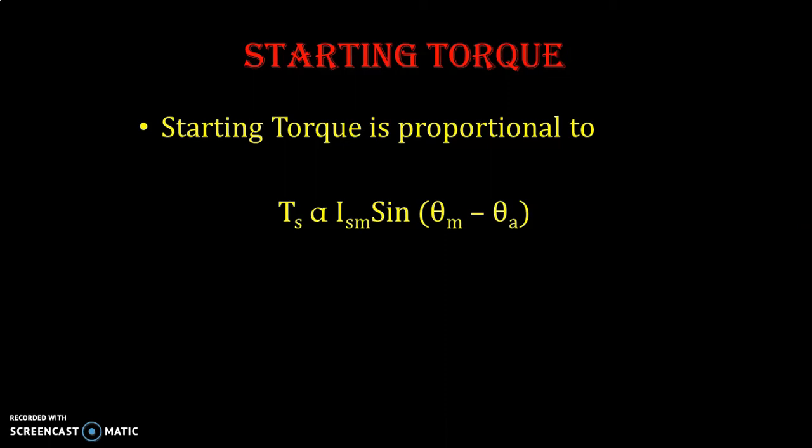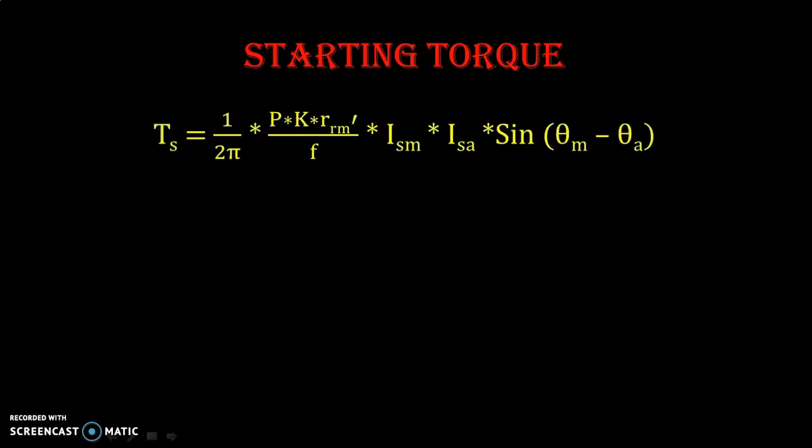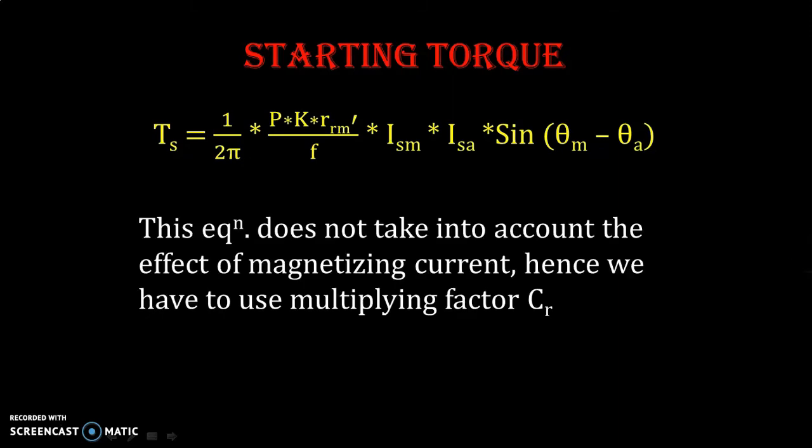The greater the angle theta_m minus theta_a, the larger the starting torque. The equation for starting torque Ts is given by: 1 over 2pi, multiplied by p (number of poles), multiplied by k (turns ratio), multiplied by Rrm dash (rotor resistance referred to stator), divided by f (frequency), multiplied by Ism multiplied by Isa, multiplied by sine of theta_m minus theta_a. This equation does not take into account the effect of magnetizing current.